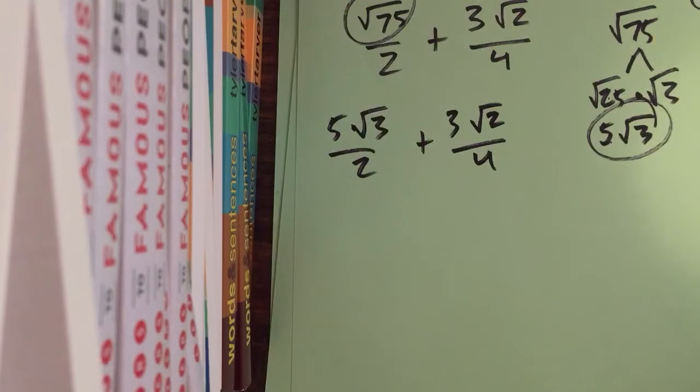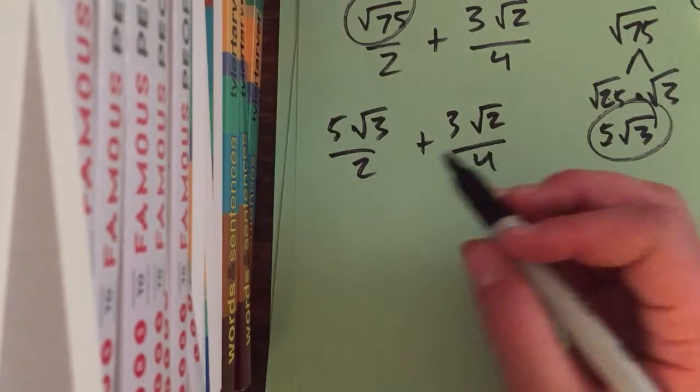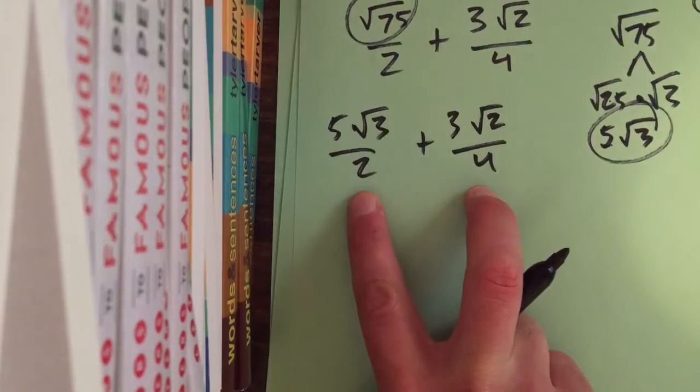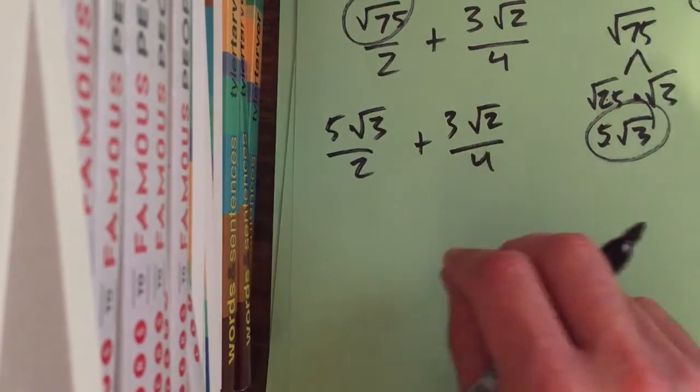I don't know what your teacher's looking for on this, but I would recommend maybe—I mean, sometimes they want you to stop here. A lot of times they'll say, well, you need to get the denominators the same, and then you can add them together, because they want the same denominator combined.